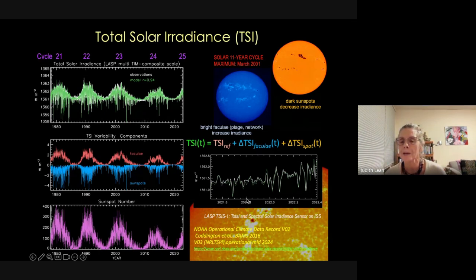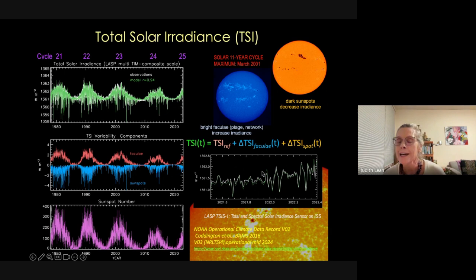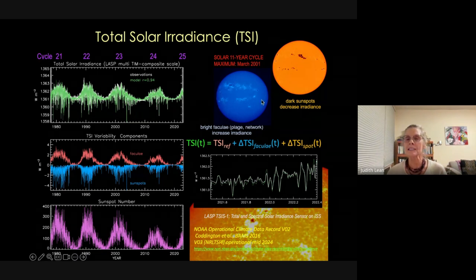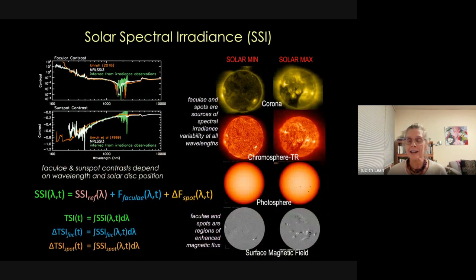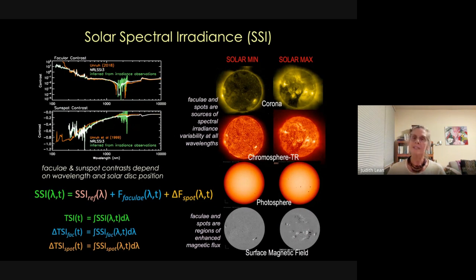Our sun is a middle-aged star moving toward more faculae-dominated variability. A high time-resolution view shows you can explain virtually all the wiggles in irradiance by this competition between spots and faculae. The spots and faculae are features of magnetic activity driven by the sun's dynamo. Solar activity produces both spots and faculae, but they have different contrasts at different wavelengths, meaning the solar spectrum varies differently at different wavelengths.